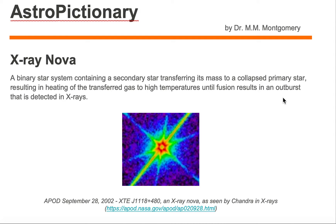And in this case, the collapsed primary star is a black hole star. So you're transferring mass to a black hole star, and usually in a nova event, it is the gas that's transferred onto that compact primary star that is being fused and blown off. But we could have an accretion disk where the actual blowing off or fusion of the gas is coming from the accretion disk.